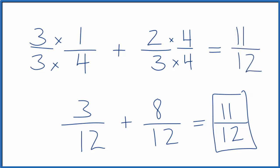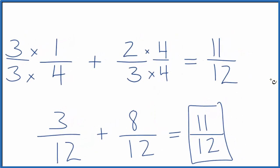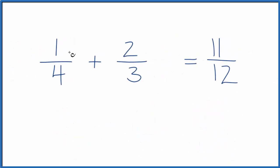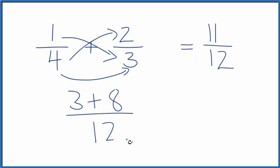Let's check our work really quickly to make sure we have the correct answer. So we could multiply one times three, that gives us three, and then four times two, that gives us eight. And then on the bottom, four times three, we multiply the denominators, that gives us 12.